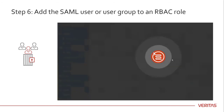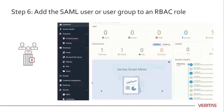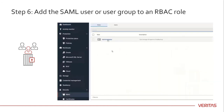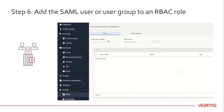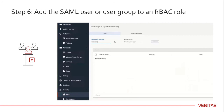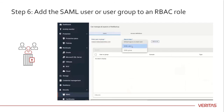Next, sign into the NetBackup web UI as a user who has permissions to create or update RBAC roles. Expand Security and select Role-Based Access Control. Click on the role you want to assign. Enter the SAML user or user group name — be sure to include the domain name. If you entered a SAML user name, select SAML user; or for a SAML group name, select SAML group. Note that these options are only available if the IDP configuration is available on the master server.